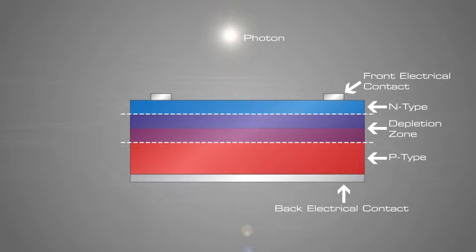The depletion zone, as explained previously with the diode, is the area around the P-N junction where the electrons from the N-type silicon have diffused into the holes of the P-type material.